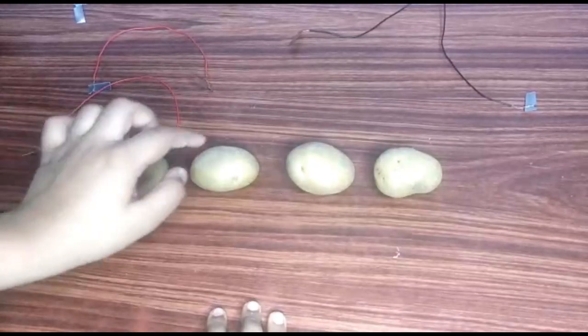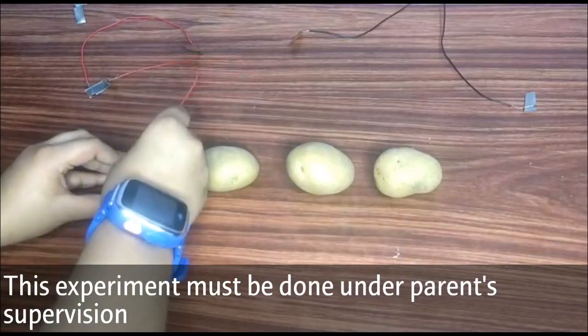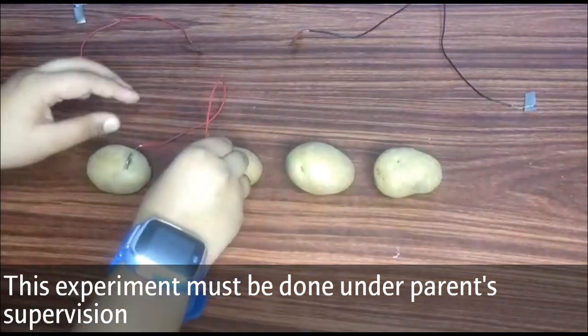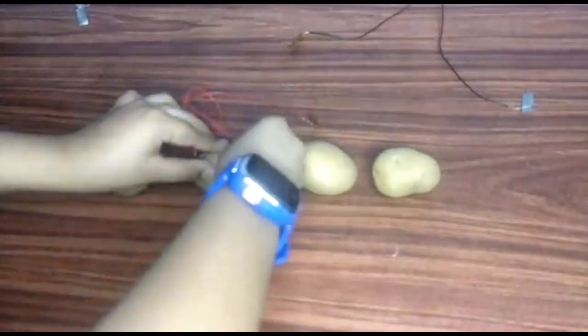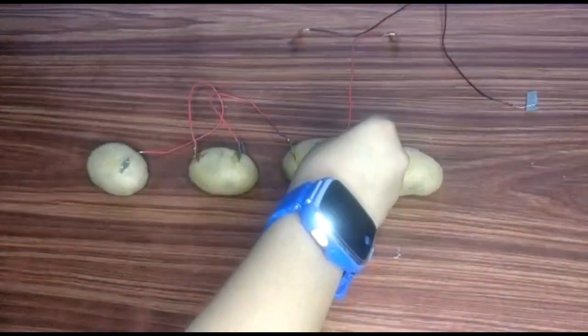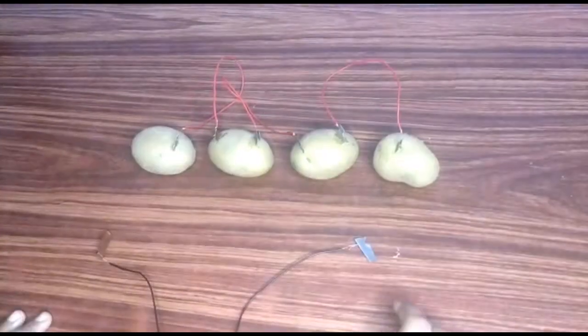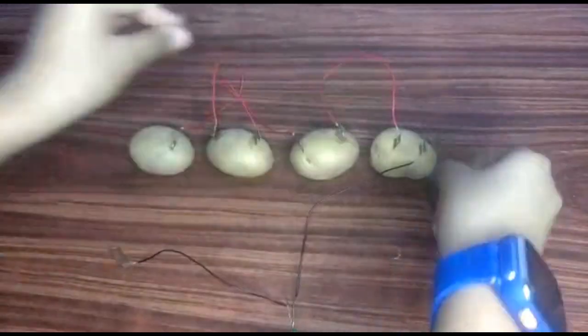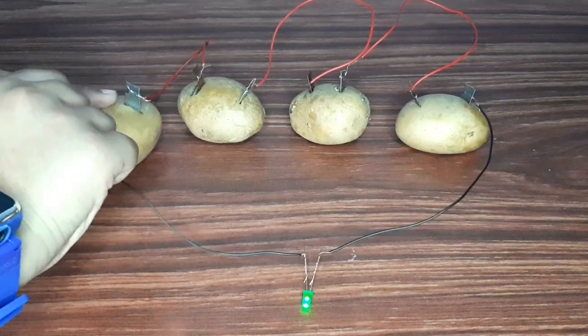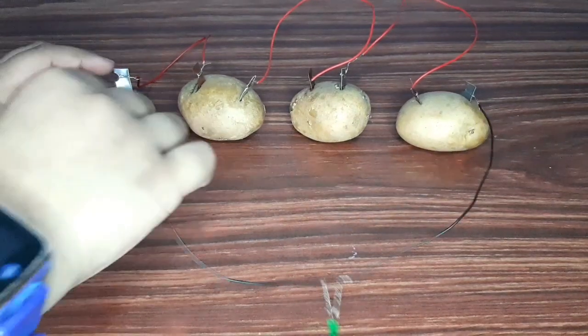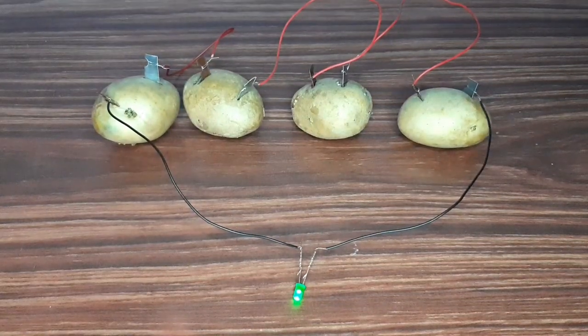Now, take four potatoes and you have to attach the wires in the pattern of zinc and copper. The long terminal of the LED is the positive terminal and the small terminal of the LED is the negative terminal. You can see that the LED is now lit up.